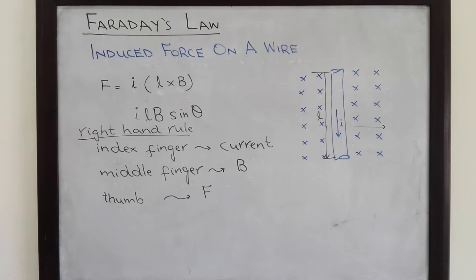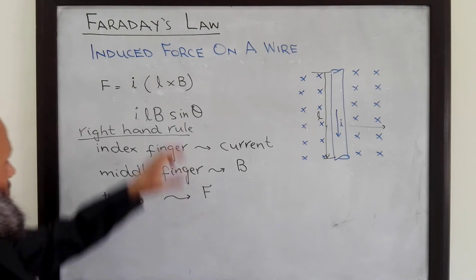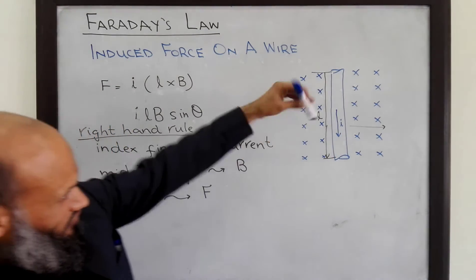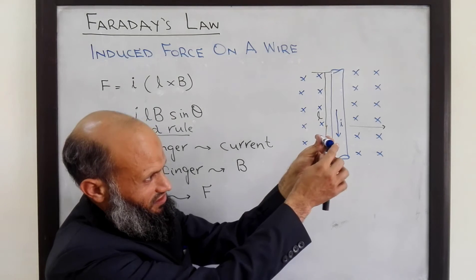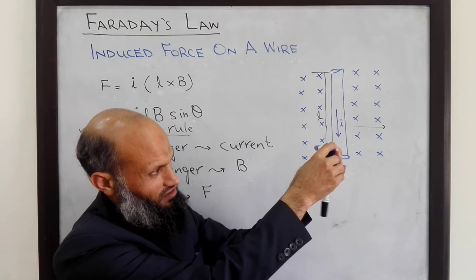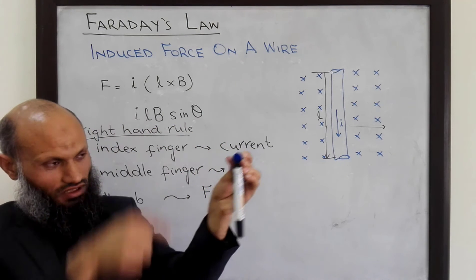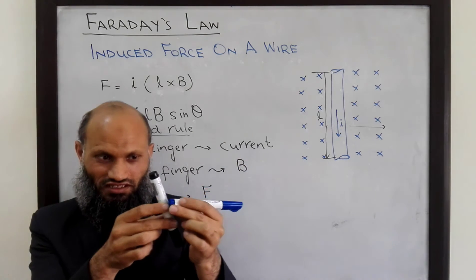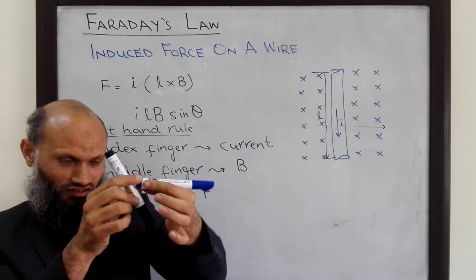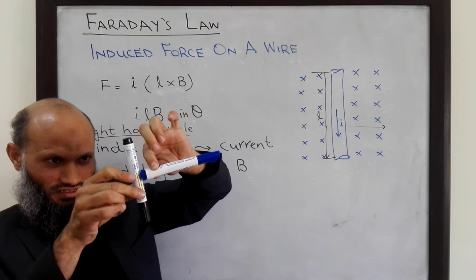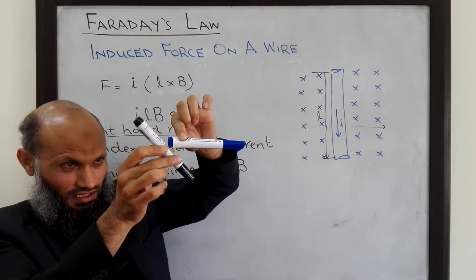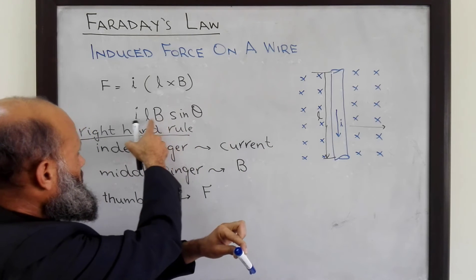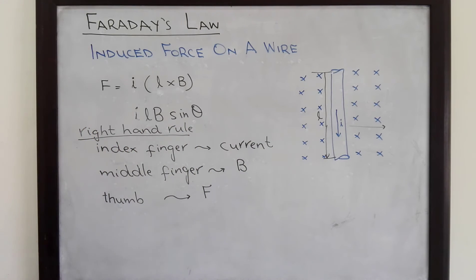Let's demonstrate this with one example, but first a note on the angle. Here the angle is 90 degrees, but it can be a different angle. In the case shown, the flux density vector is into the surface of the board and the L vector is in the direction of current — this gives exactly 90 degrees. However, L can be at some other angle, in which case the magnitude equals I L B sine of the angle between the two vectors.